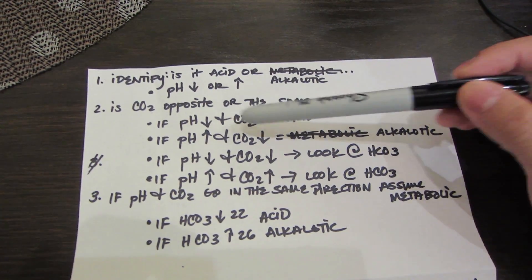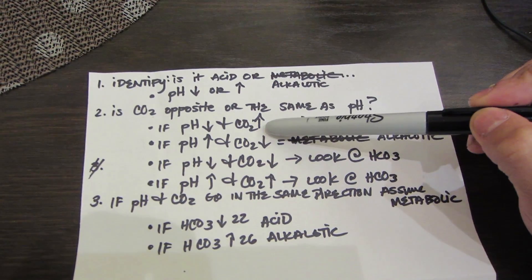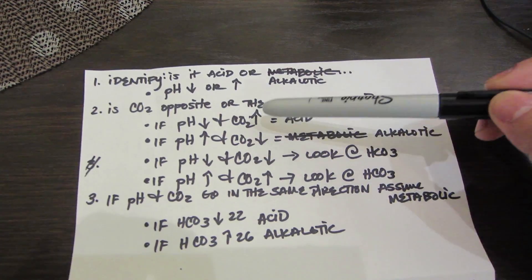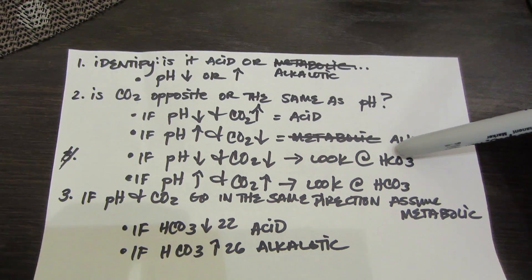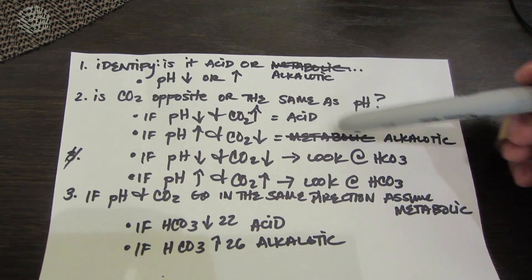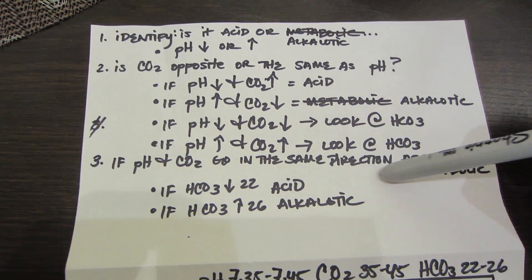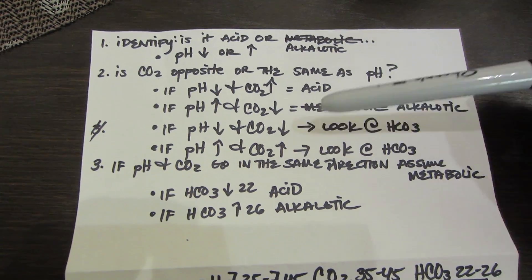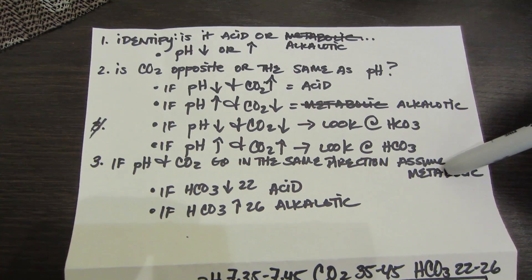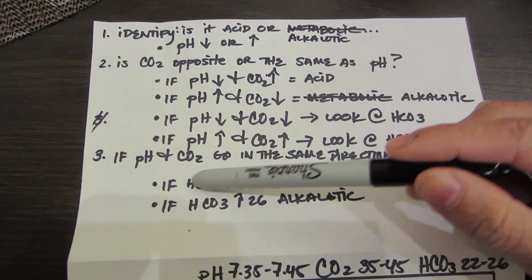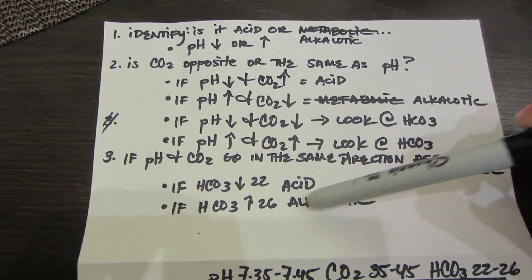Is pH greater than normal or less than normal? CO2 greater than normal or less than normal? So once we've identified if it was acid or alkalotic, that's when you kind of have a formula. Step 3: if pH and CO2 basically go in the same direction, which is less than the normal or greater than the normal, you're going to assume it's a metabolic disorder. Now with metabolic disorder, HCO3 if it's less than 22, remember it's acid, and if it's greater than 26, alkalotic.